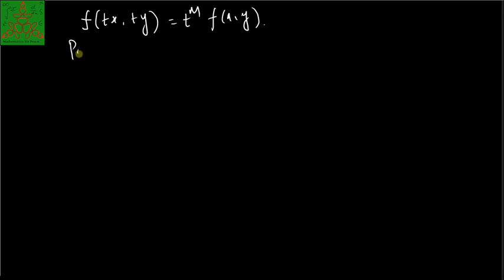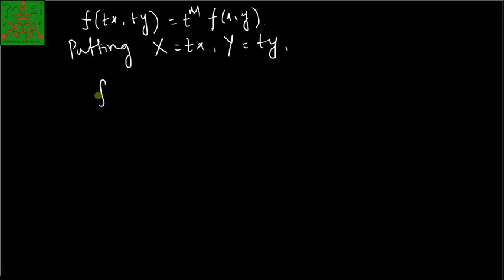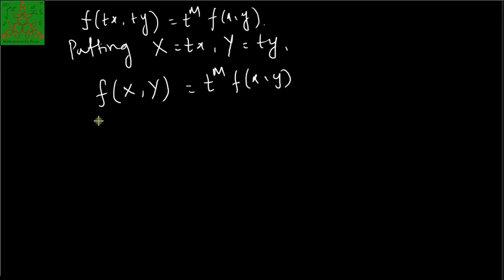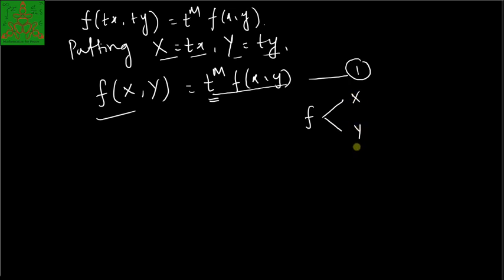For this we substitute capital X = tx and capital Y = ty, so this expression becomes F(X, Y) = t^m · f(x, y). Now if we take the partial derivative of this equation with respect to t, note that f is a function of X and Y, and X and Y are themselves functions of t, so there will be two paths reaching t via the chain rule.